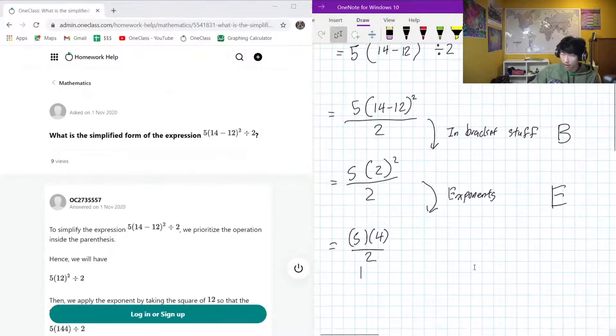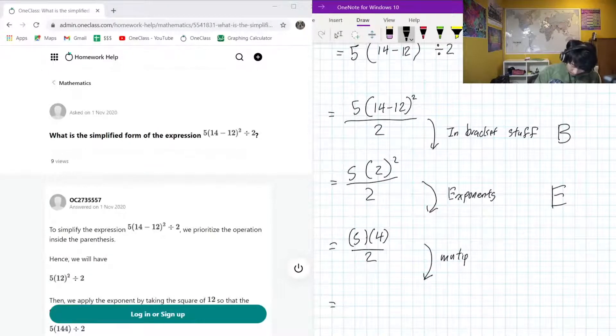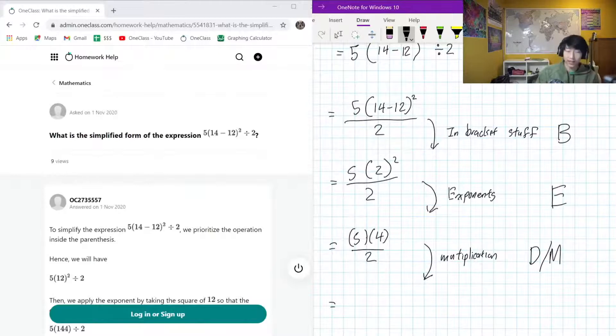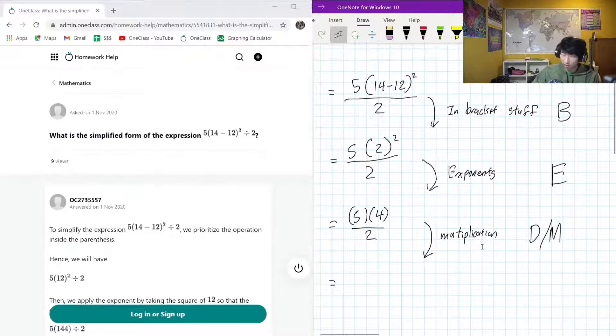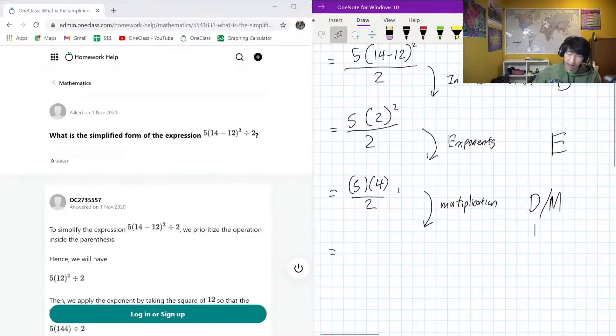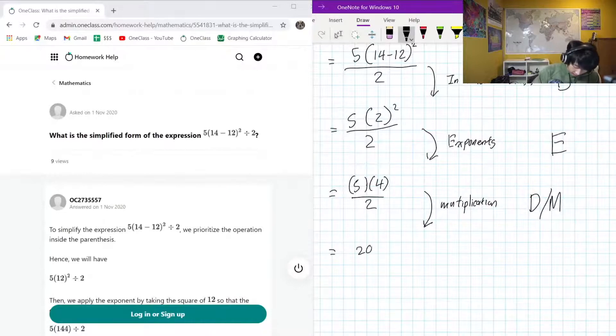And then we do the multiplications. So the D and M in BEDMAS are actually on the same hierarchy tier, but we'll do the multiplication first just to get the top easier. We have 5 times 4 is 20 over 2, and then division, which is just 10. So this entire thing simplified is just 10. Fairly straightforward.